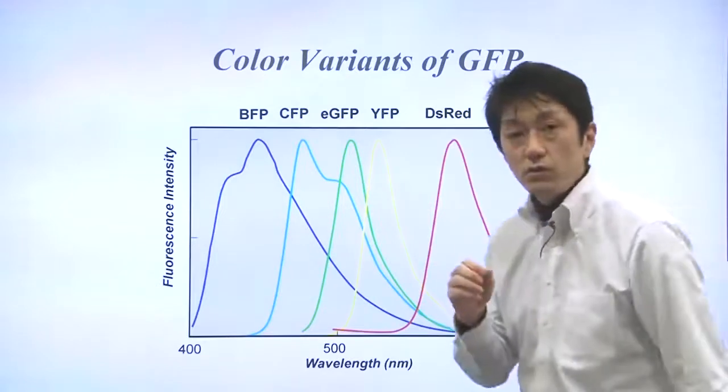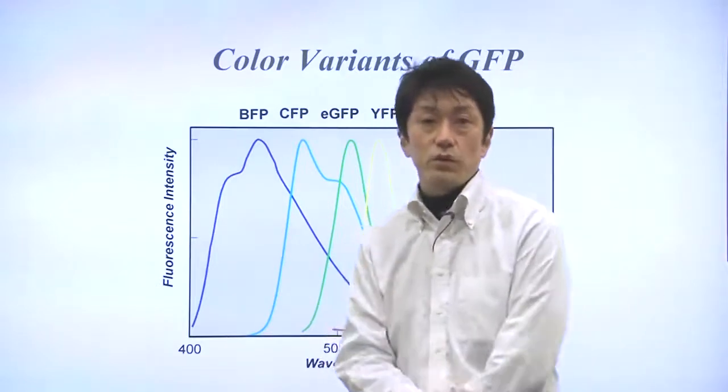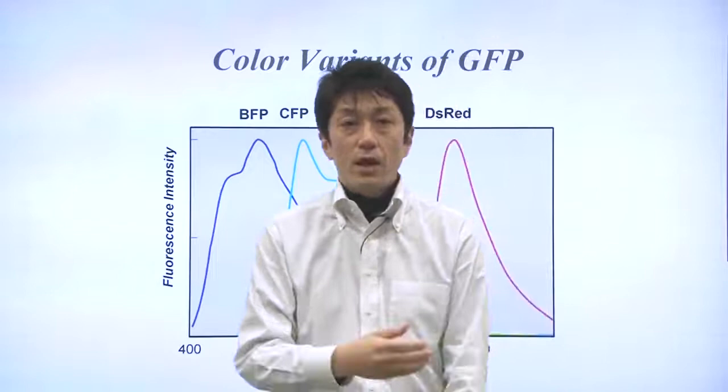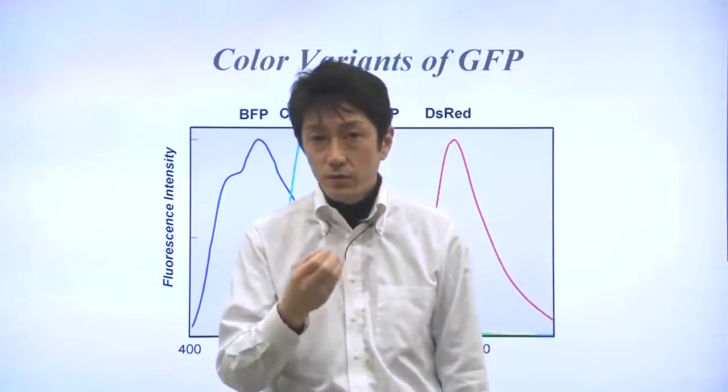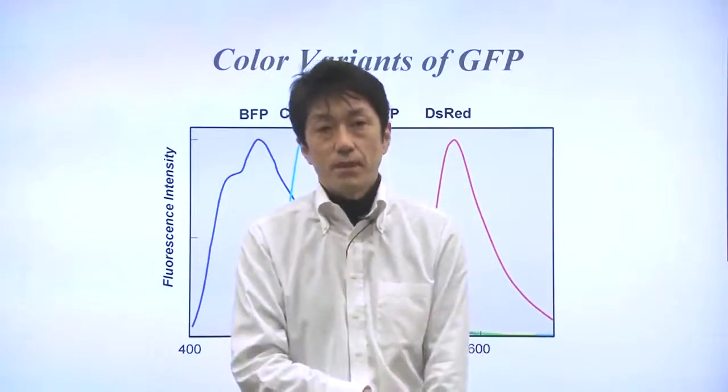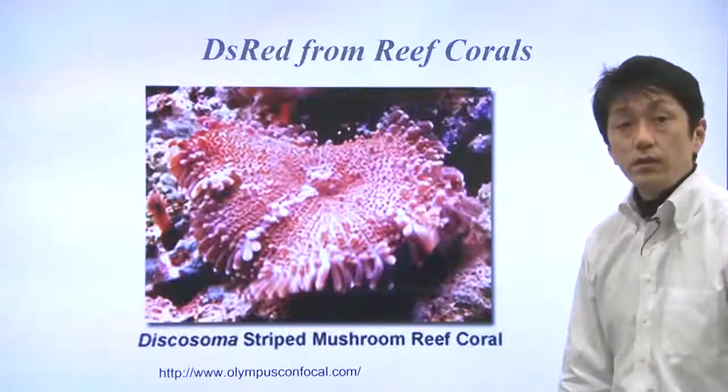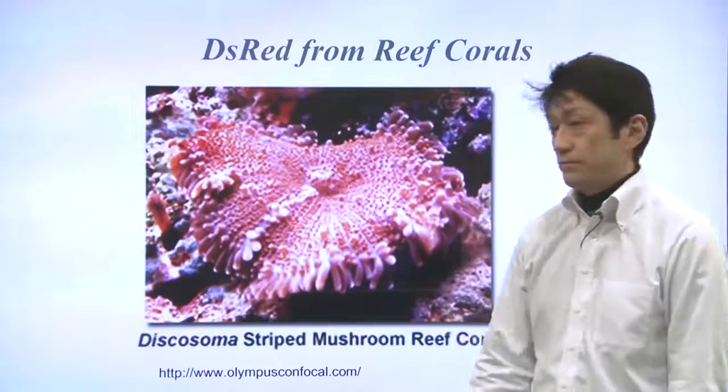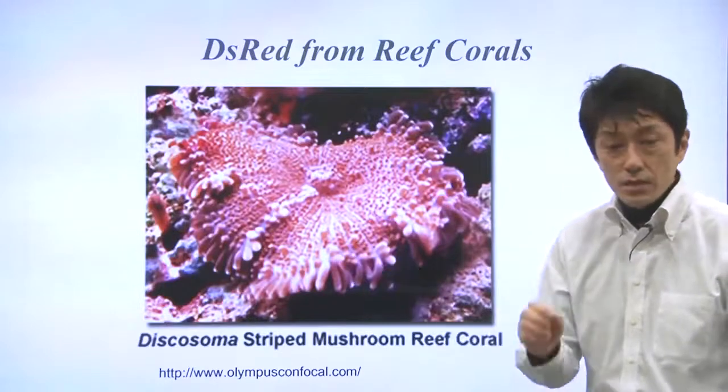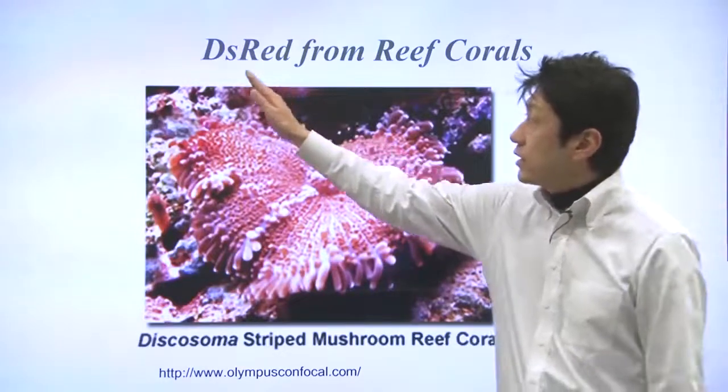Jellyfish did not have a red fluorescent protein. How can we obtain red fluorescent proteins? Reef corals had one. It's called DS-RED.